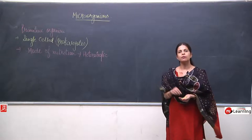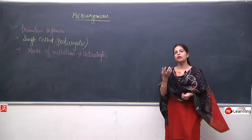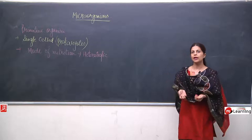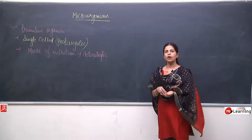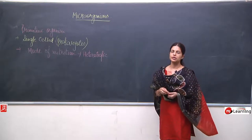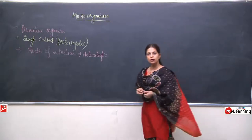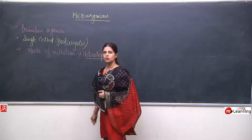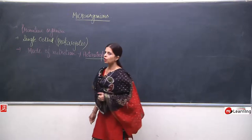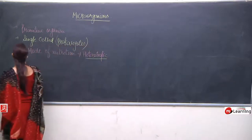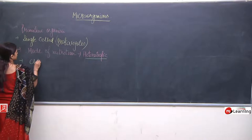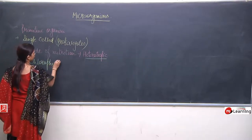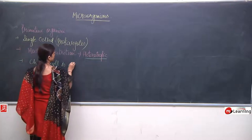To have autotrophic mode of nutrition, one has to have chlorophyll. But here the mode of nutrition is heterotrophic, so obviously chlorophyll will also be absent — chlorophyll is absent.